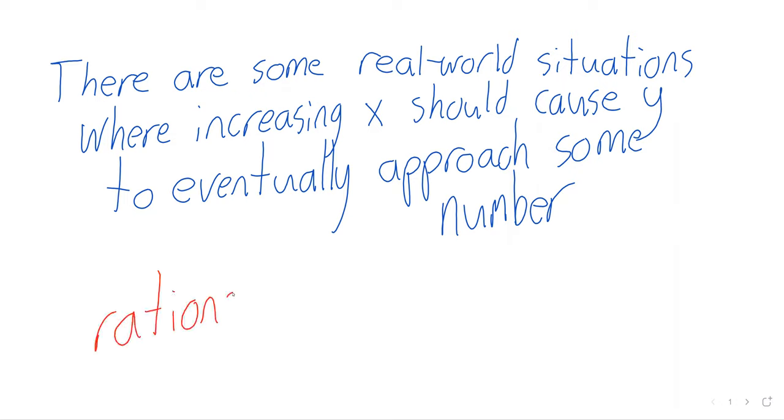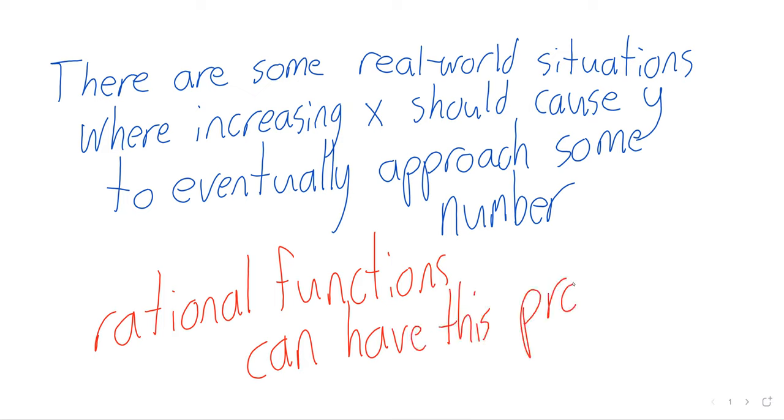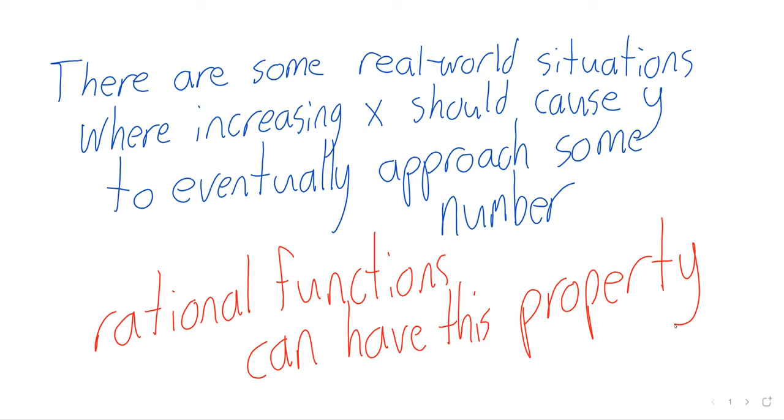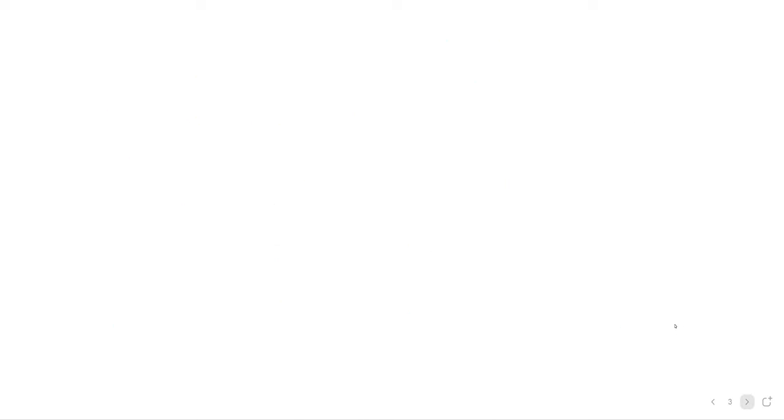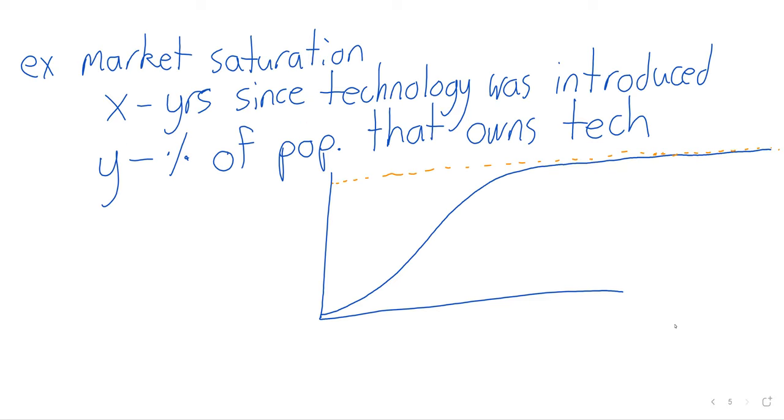So by contrast, rational functions can have this property. So because of that, rational functions show up in a wide variety of situations. I mean, anything from medicine to business, any situation where you want a quantity to just approach some number as your x variable increases is a good candidate to be studied or modeled using rational functions.